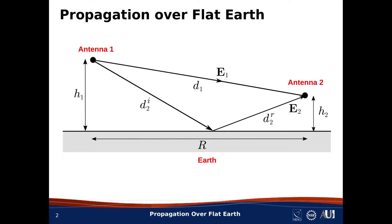We imagine in this scenario that the signal received by Antenna 2 will be the coherent sum of two contributions: a signal conveyed by a wave propagating directly from Antenna 1 to Antenna 2, and a second signal conveyed by a wave which has been reflected from the surface of the Earth.